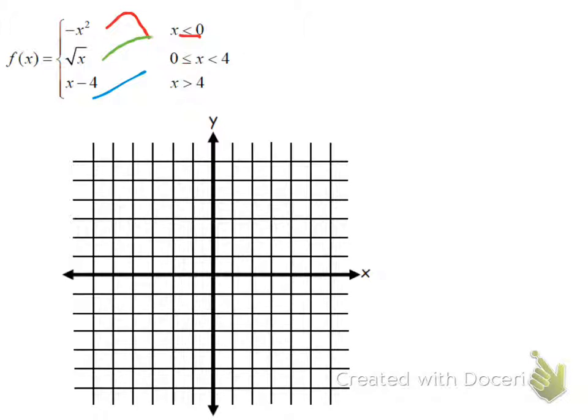All right. So starting with the first function, negative x squared, I'm going to follow that graph all the way up to x equals zero. All values from negative infinity all the way up until zero. So I'm only going to plug in this endpoint. I'm not meaning to cross it down. I'm meaning to underline it. I'm only going to plug in that endpoint into my function.